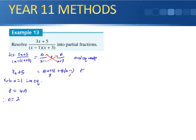Now substitute x = -3 into the equation. We get 3(-3) + 5 = -9 + 5 = -4, and (-3 - 1) = -4, so -4 = -4B, therefore B = 1. That's the easiest way of doing these instead of expanding and collecting like terms.